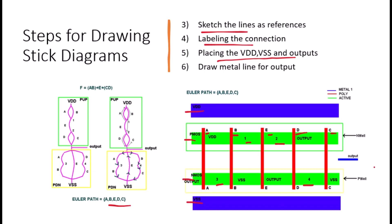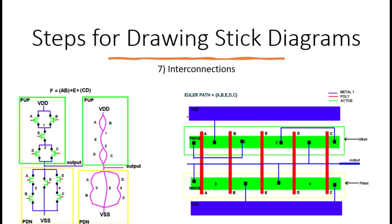Now draw the metal lines that will carry the output signal. In most diagrams, metal one is used for the output. Place this metal line horizontally across the top and bottom of the transistors to connect the output. This metal line acts as the main connection for the output and may need adjustments based on how your connections are routed.